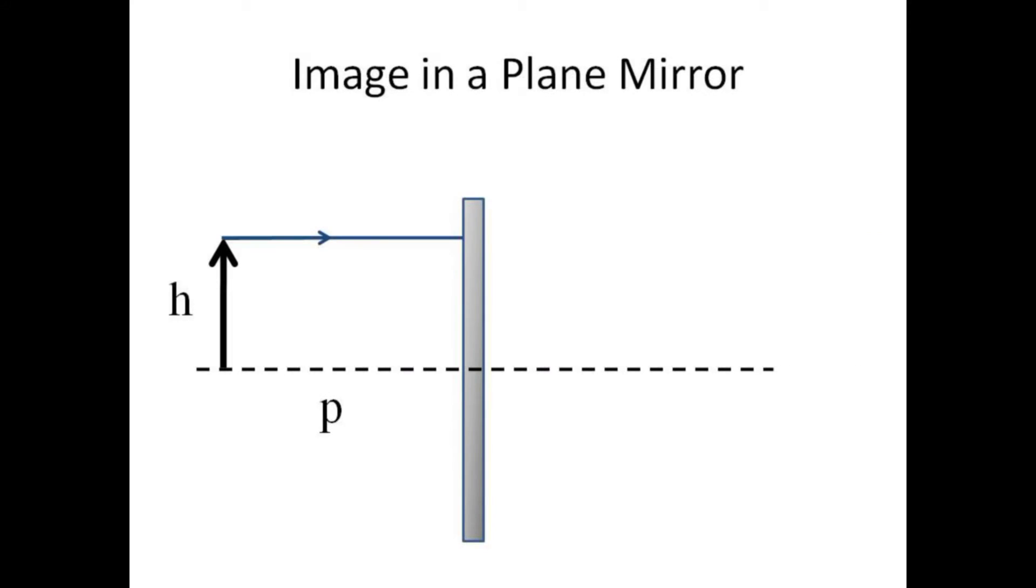Imagine an object with height h placed an object distance p in front of a plane mirror. The rays for our ray trace will all begin at the tip of the object and must obey the law of reflection.